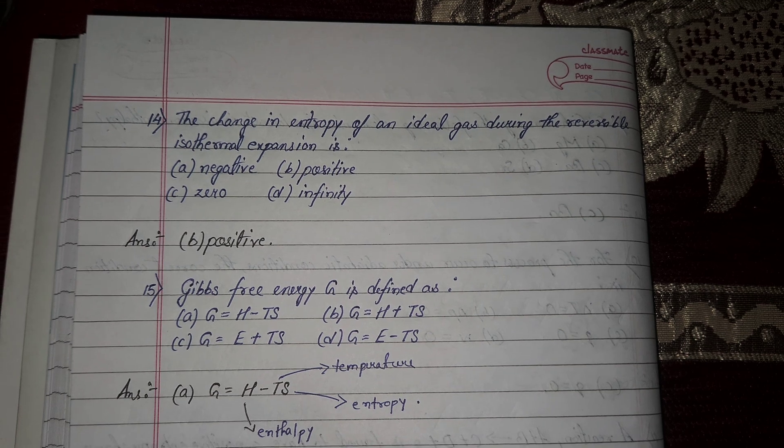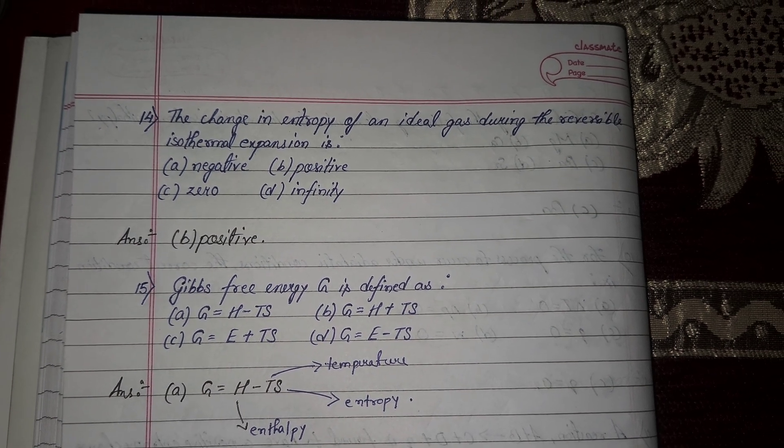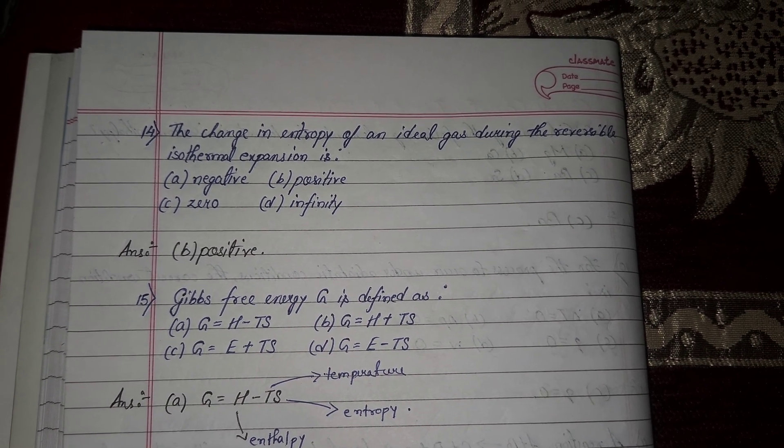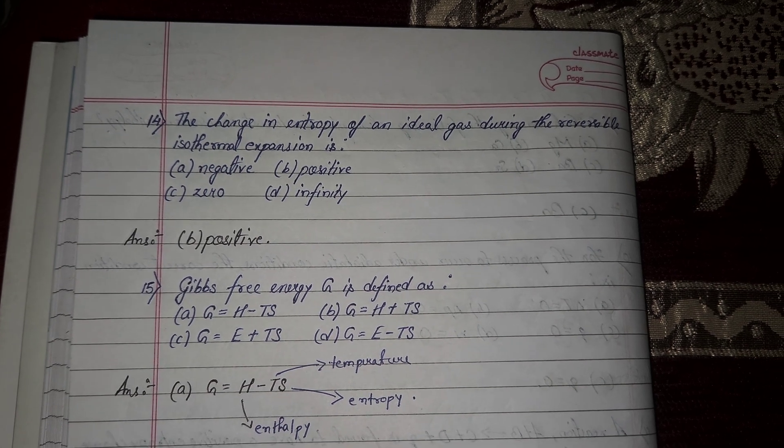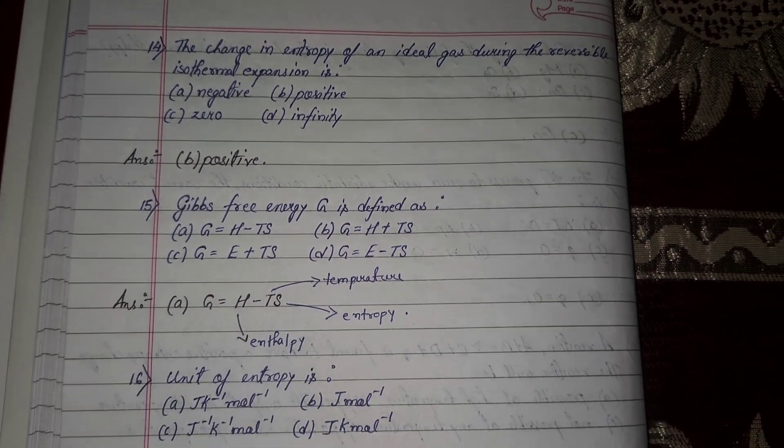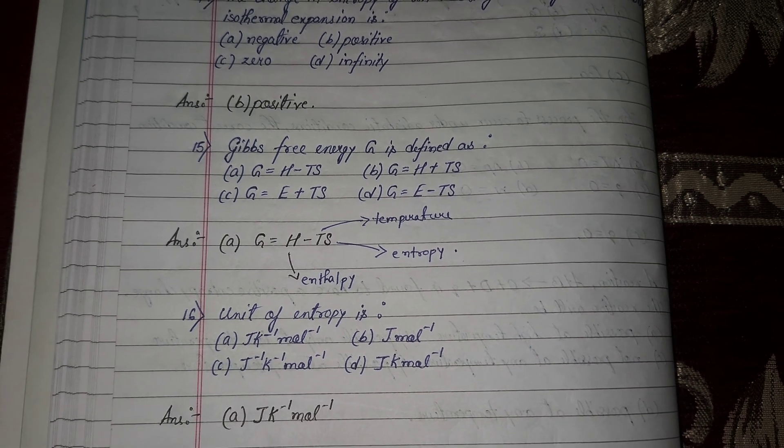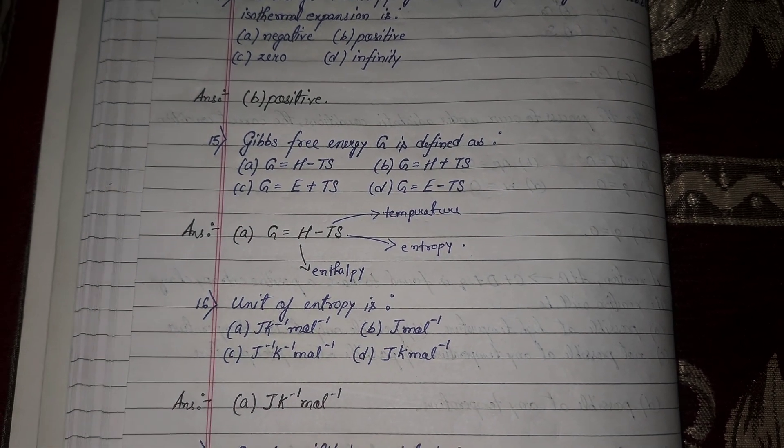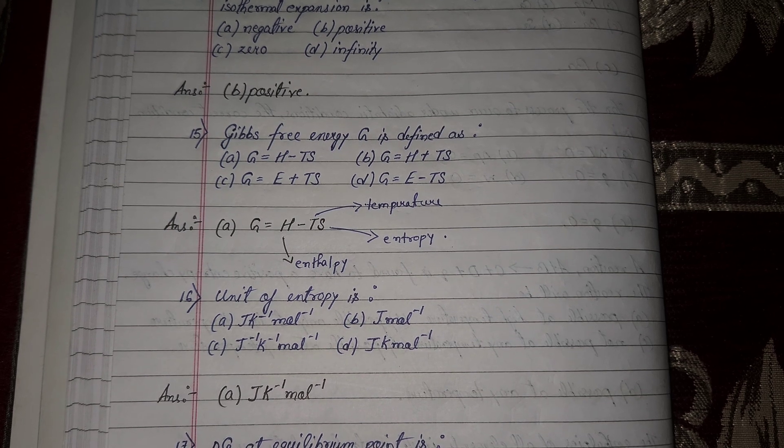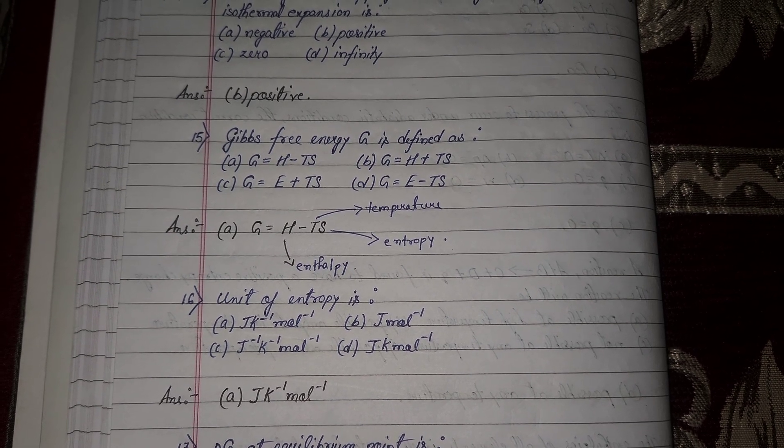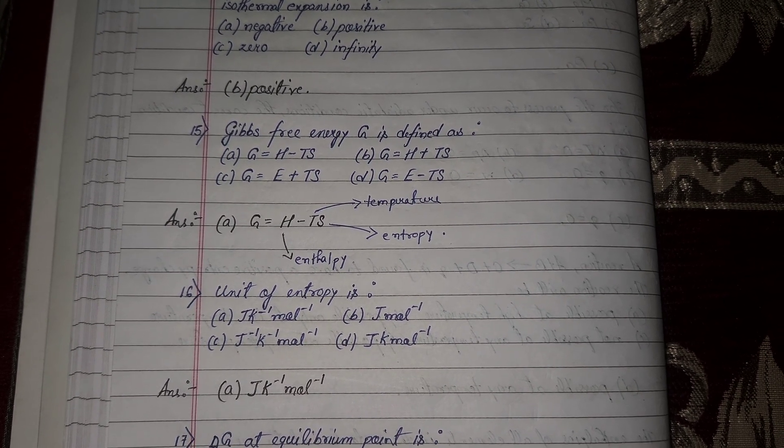Next question number 14, the change in entropy of an ideal gas during the reversible isothermal expansion. Question number 15, G is defined as option number A, G equal to H minus TS. That is, H is enthalpy, T is temperature and S is entropy.